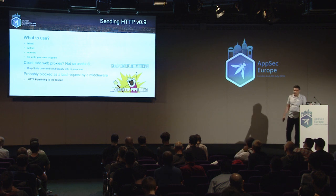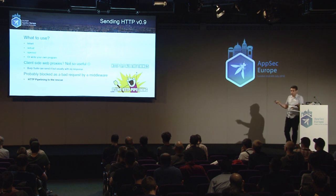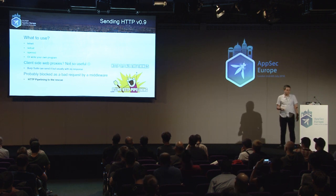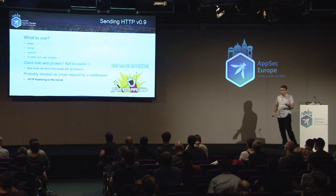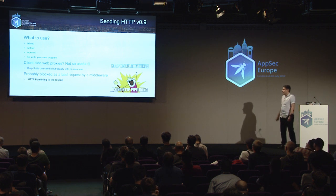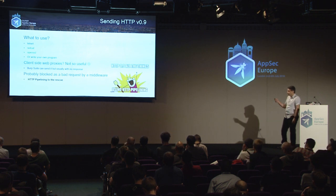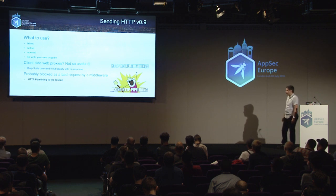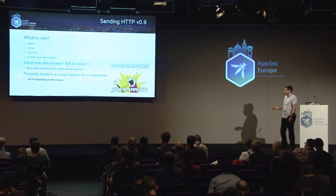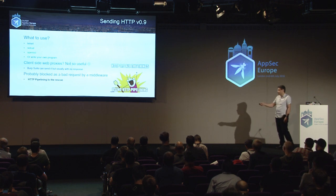How can you send HTTP version 0.9? I tried Fiddler, Zap, and Burp Suite. None of them could send HTTP 0.9 — Burp Suite could but wasn't showing the response, so I had to use Wireshark. You can always use Telnet, Netcat, OpenSSL, and so on. But who wants to use those low-level tools when testing a web application? I'm going to show you a method to send HTTP version 0.9 in Burp Suite using HTTP pipelining.